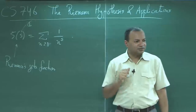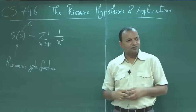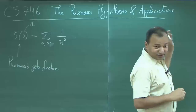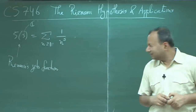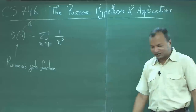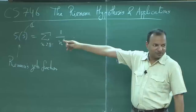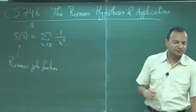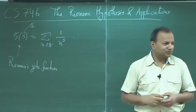Then we will look at generalizations of this function in different domains and see what they say about those different domains. We will also look at some applications of the zeta function — or I should say, applications of the Riemann hypothesis. I have not talked about what the Riemann hypothesis is, which I will do later. The hypothesis pertains to some property of the zeta function, and it also has many consequences in various parts of mathematics and computer science, so we will look at some of those consequences.